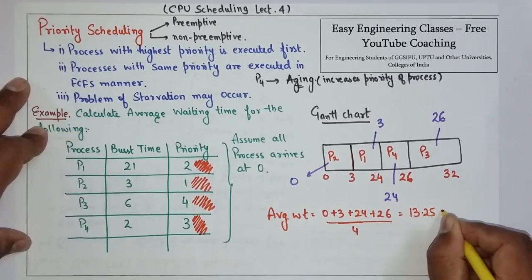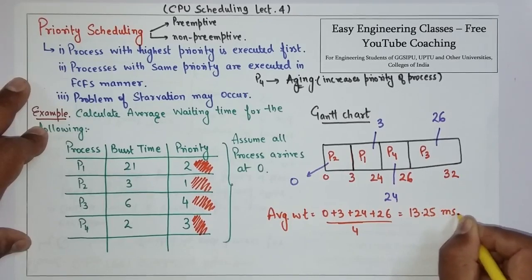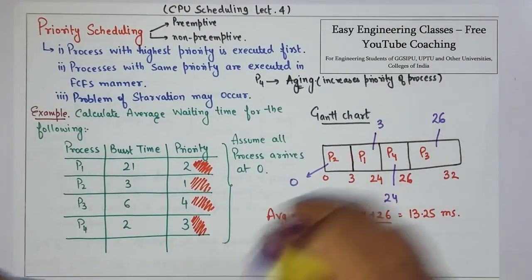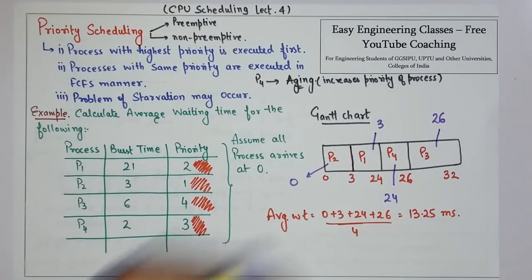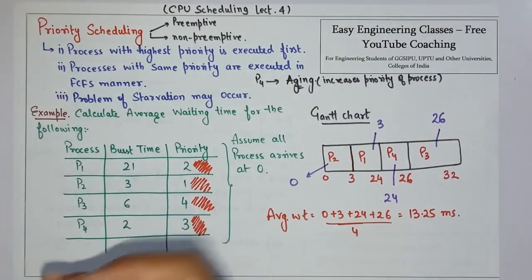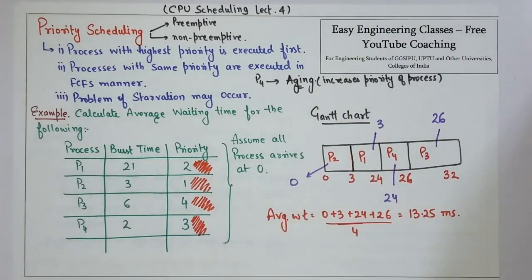The average waiting time works out to 13.25 ms. This is the priority based scheduling — specifically the non-preemptive priority based scheduling example. Thank you for watching the video. Please subscribe to my YouTube channel for more tutorials on operating systems and other computer science related subjects.